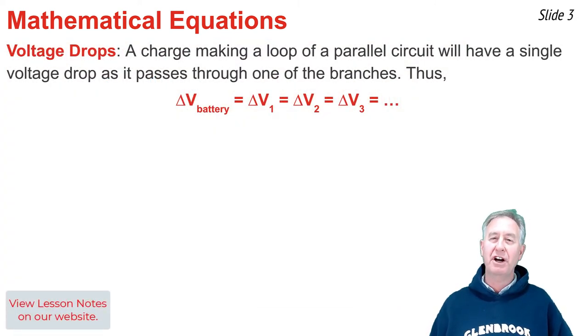In a parallel circuit, charge passes through only a single resistor or branch, and when it does, it encounters a voltage drop. The voltage drop will be the same whether it passes through the first branch, second branch, or third branch, and that voltage drop is equal to the voltage gained in the battery.